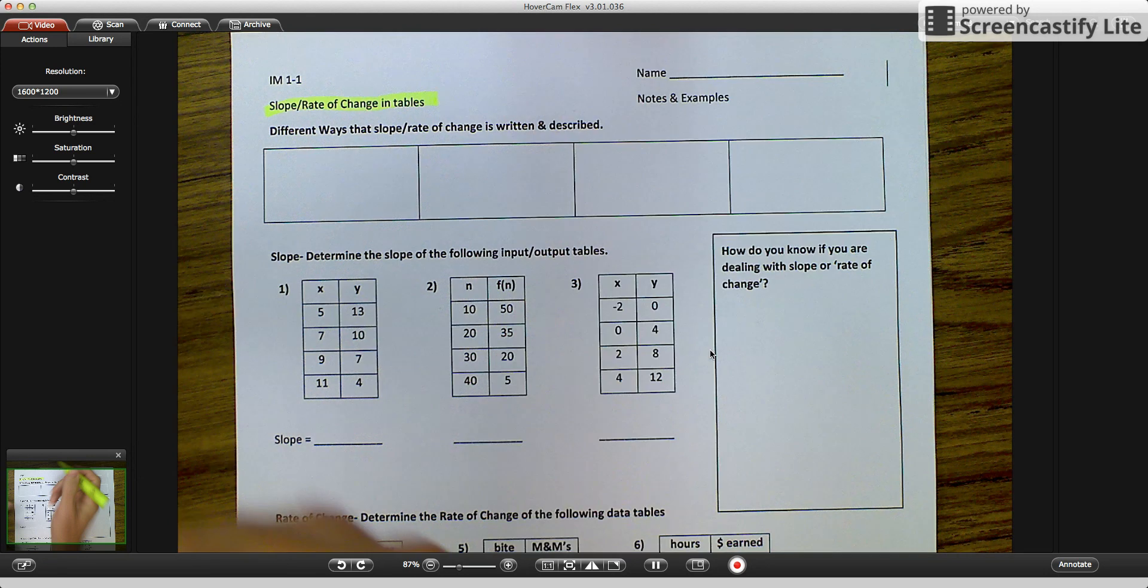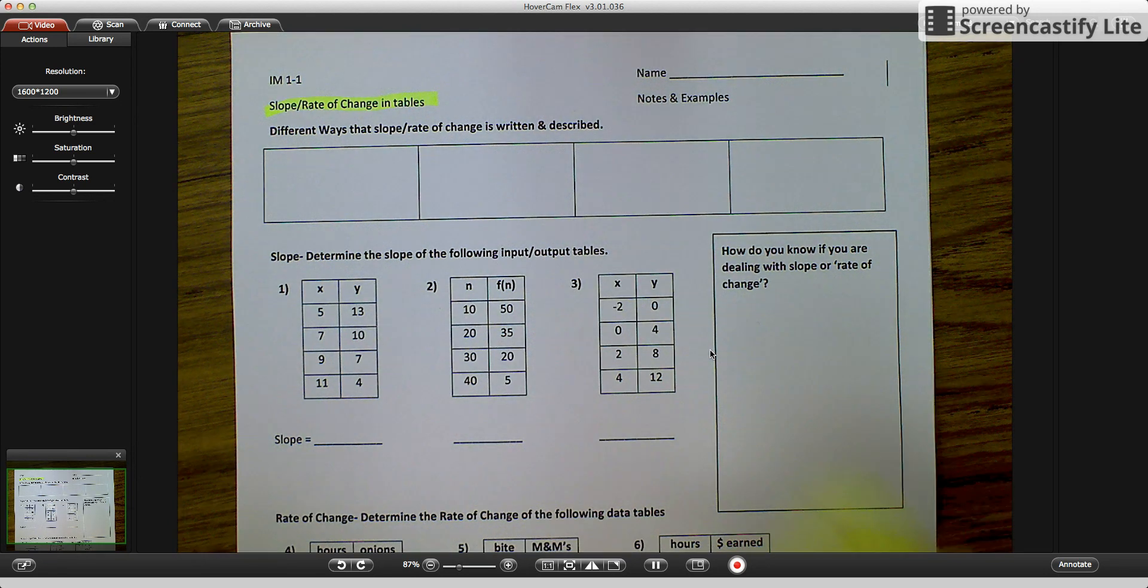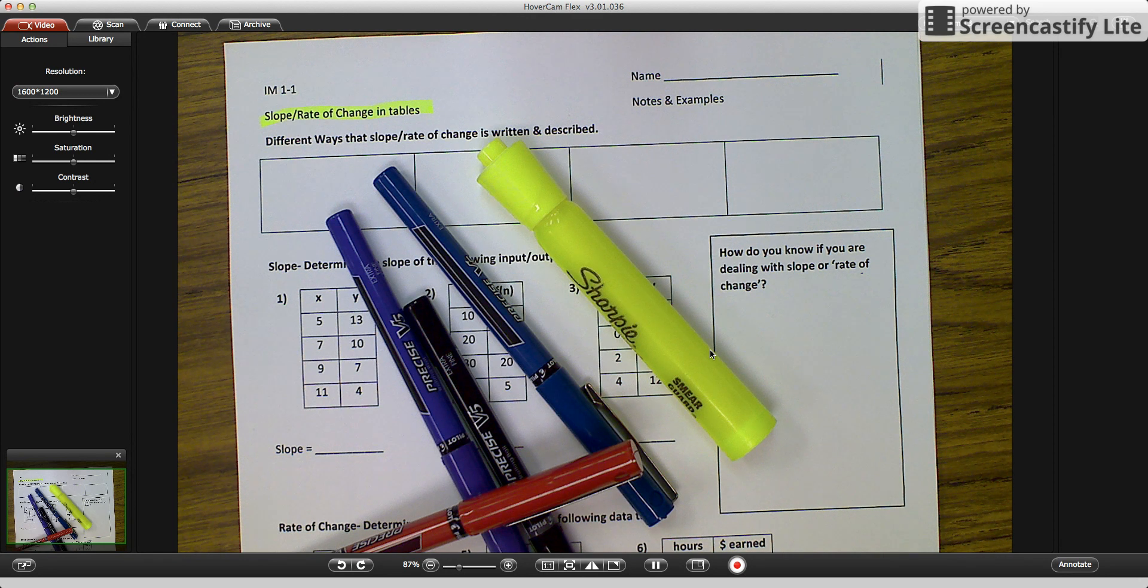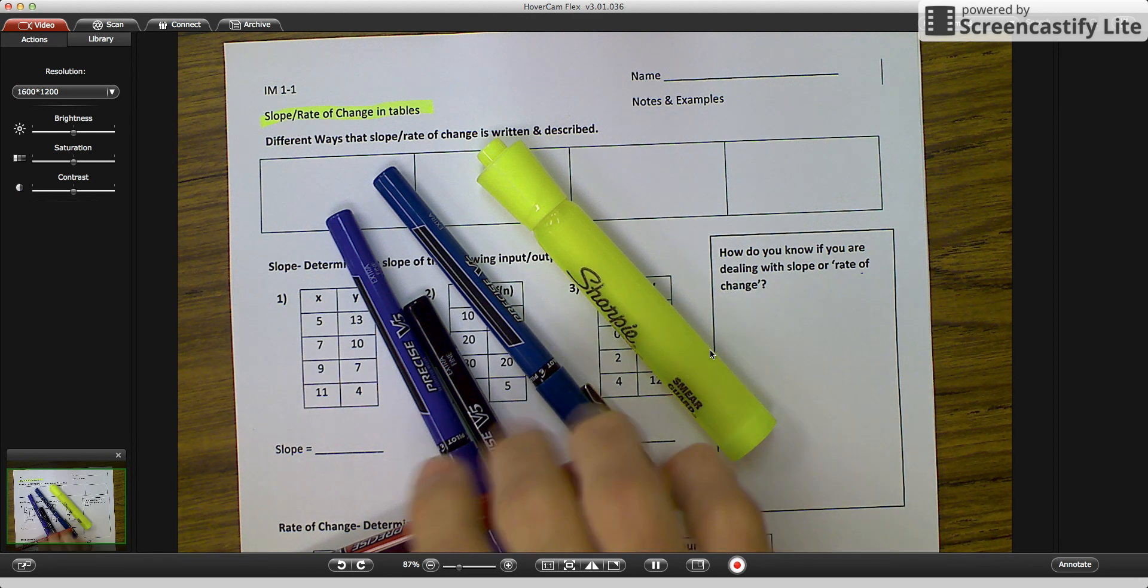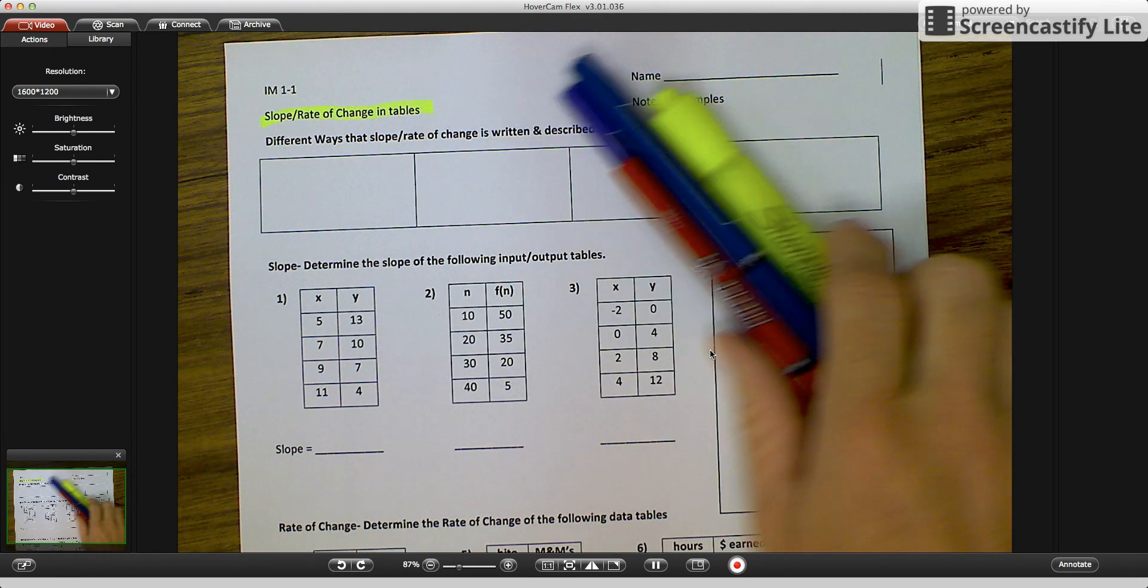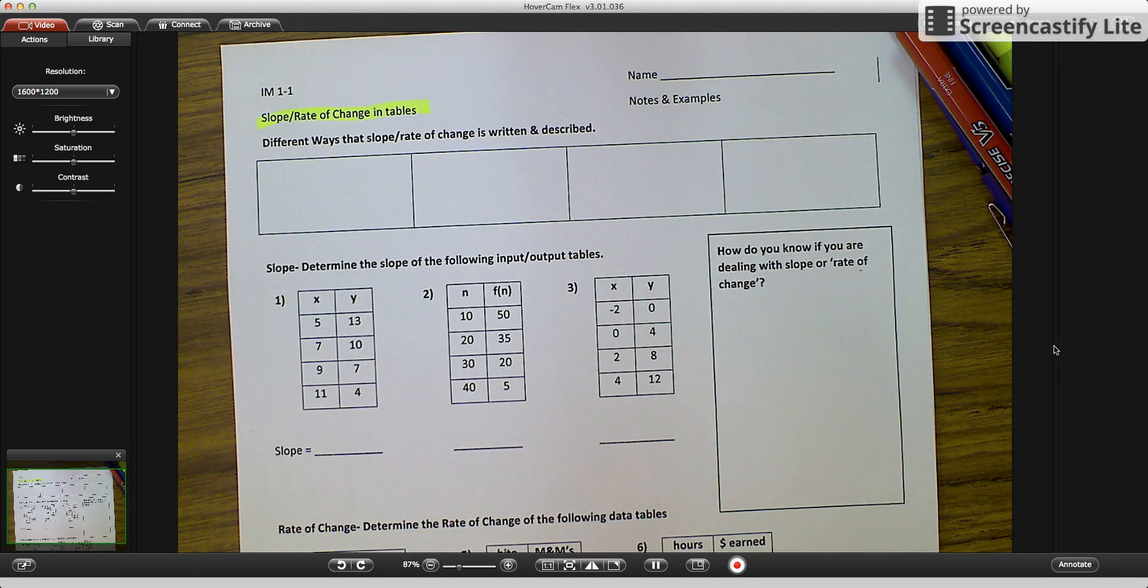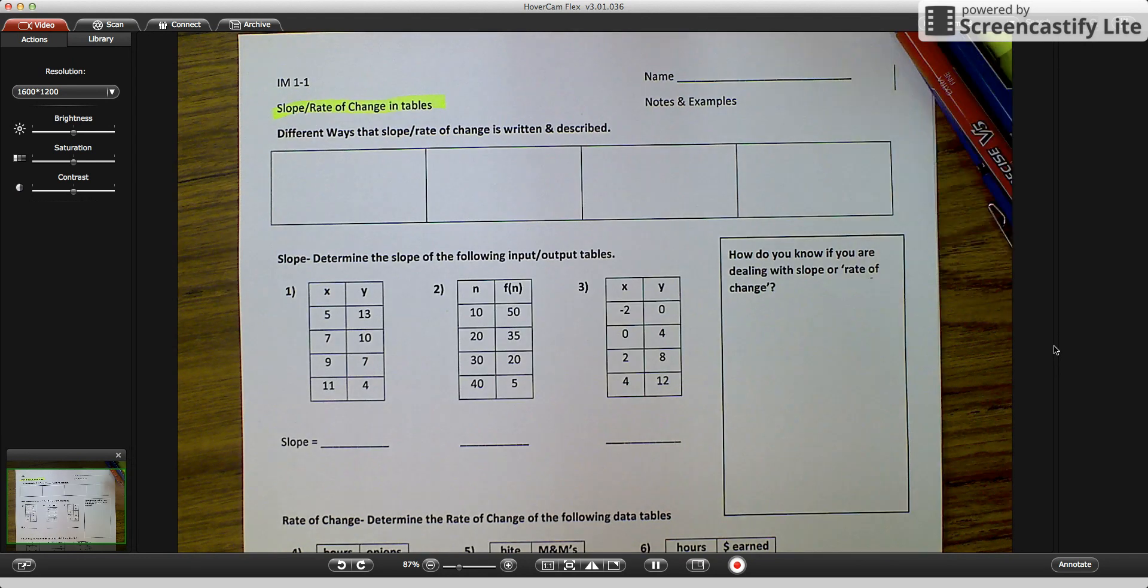Within the slope and rate of change we're going to deal with tables today. So I have a highlighter, I've got a lot of different colored pens that I'm going to use. This document is also attached to school loop so I recommend you print it off so that you don't have to write all these different boxes and information. So let's get started.